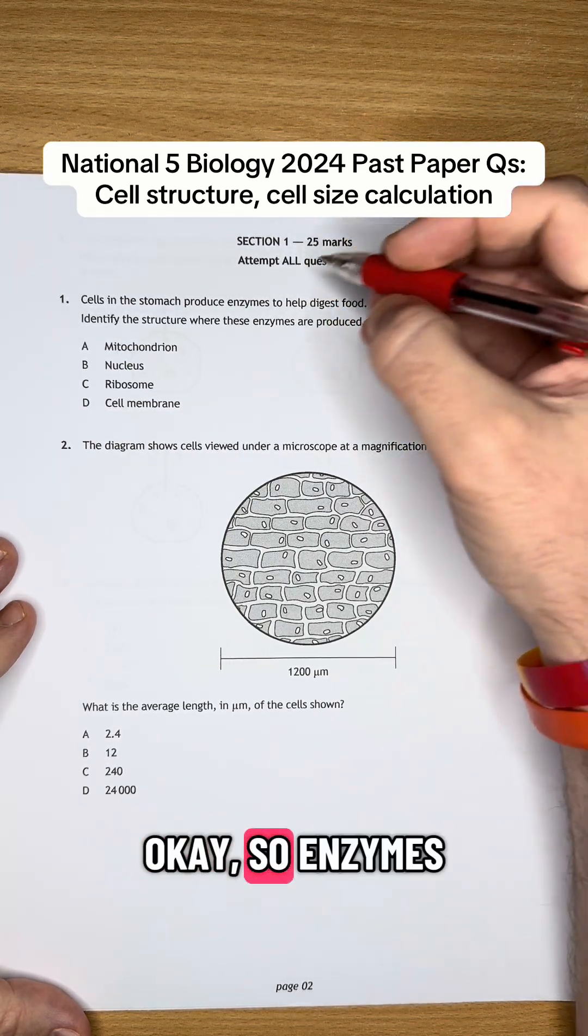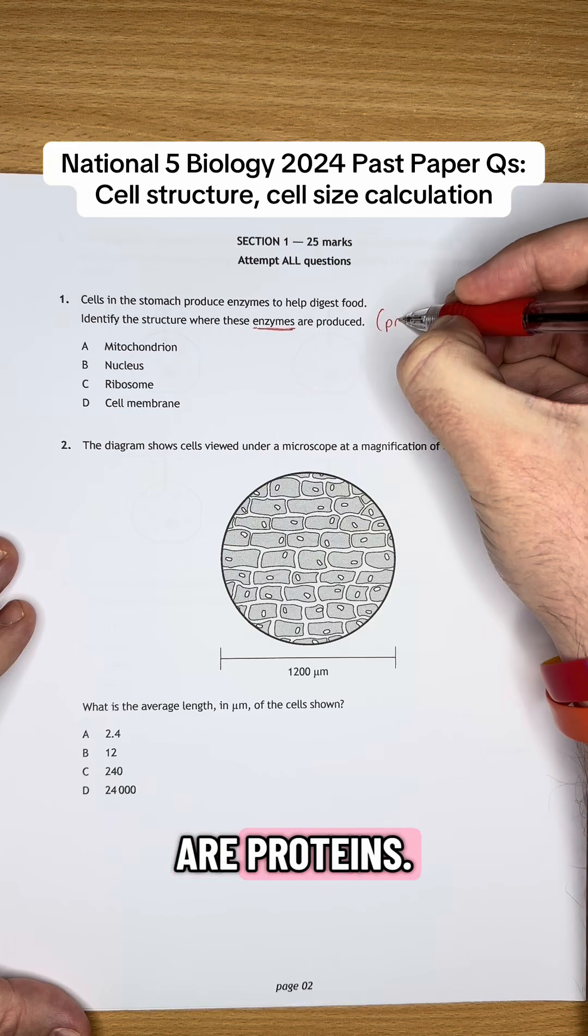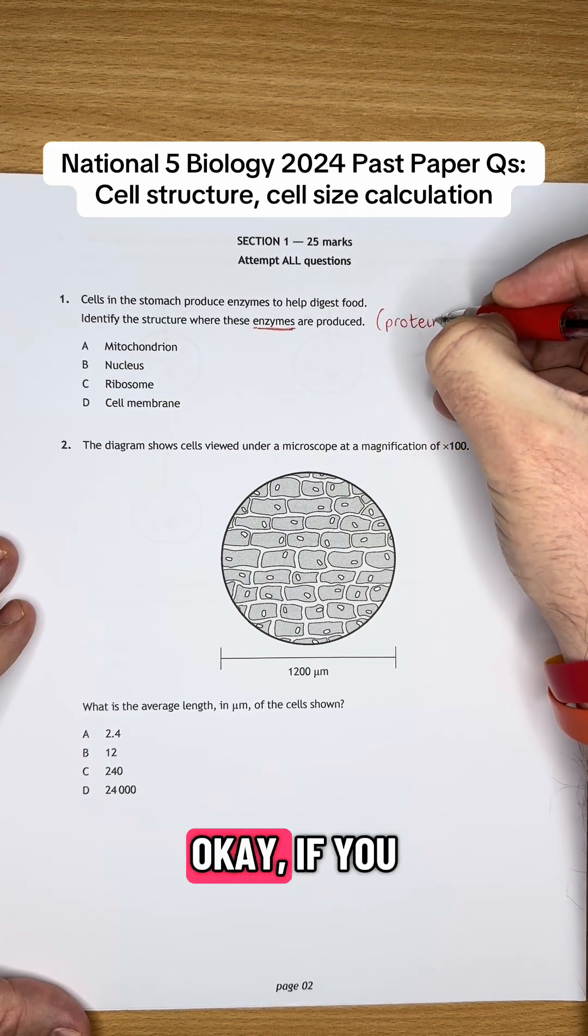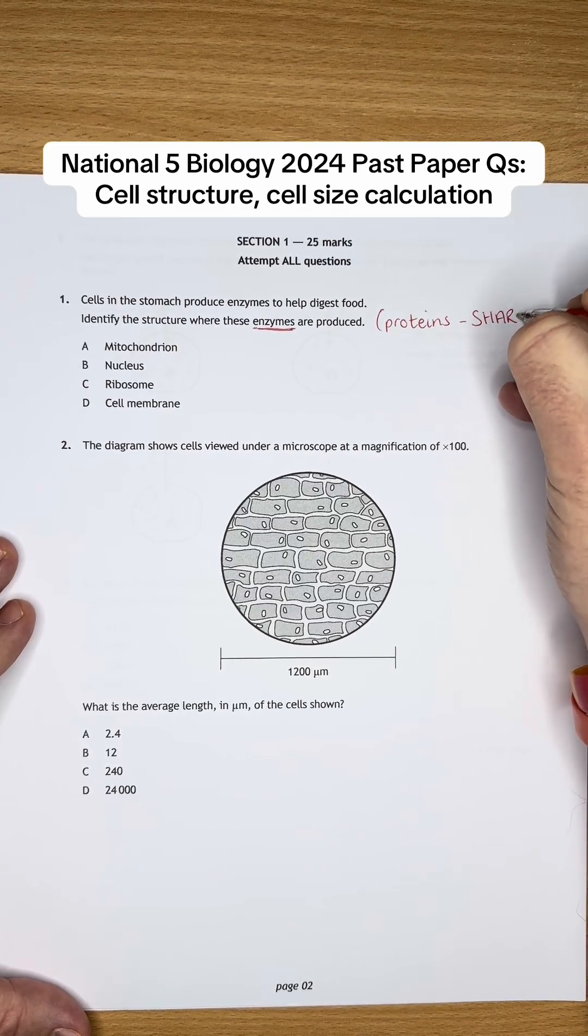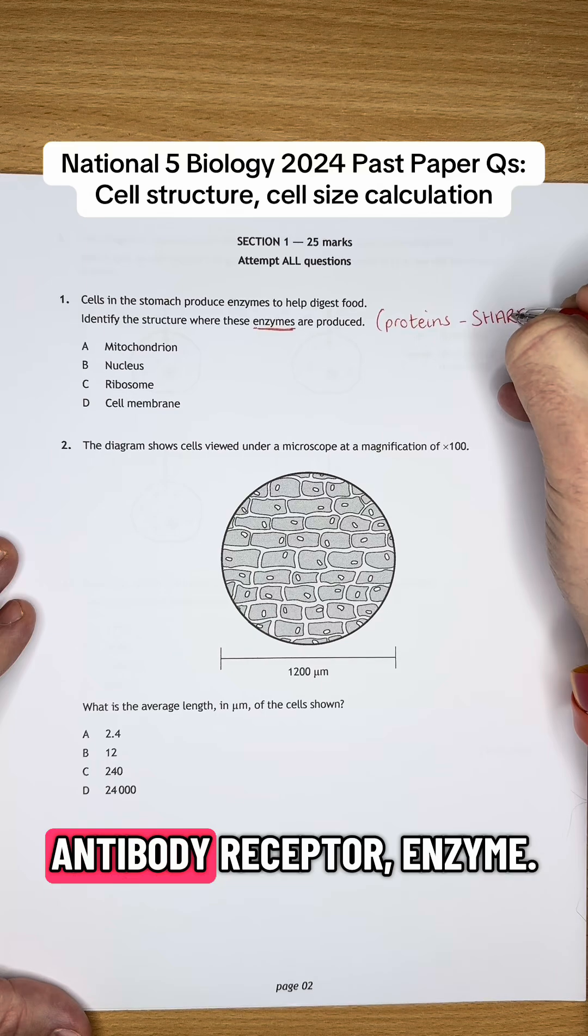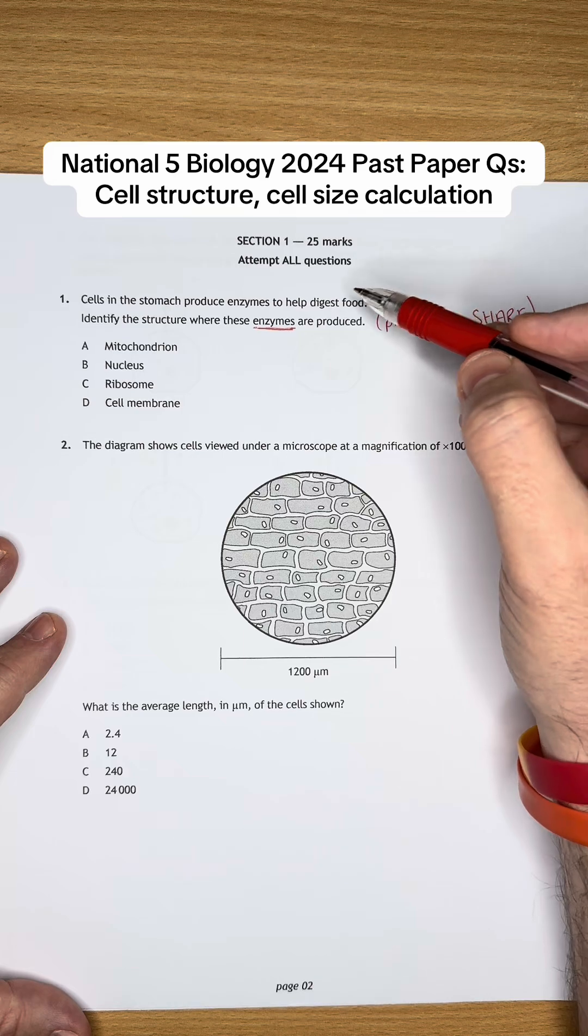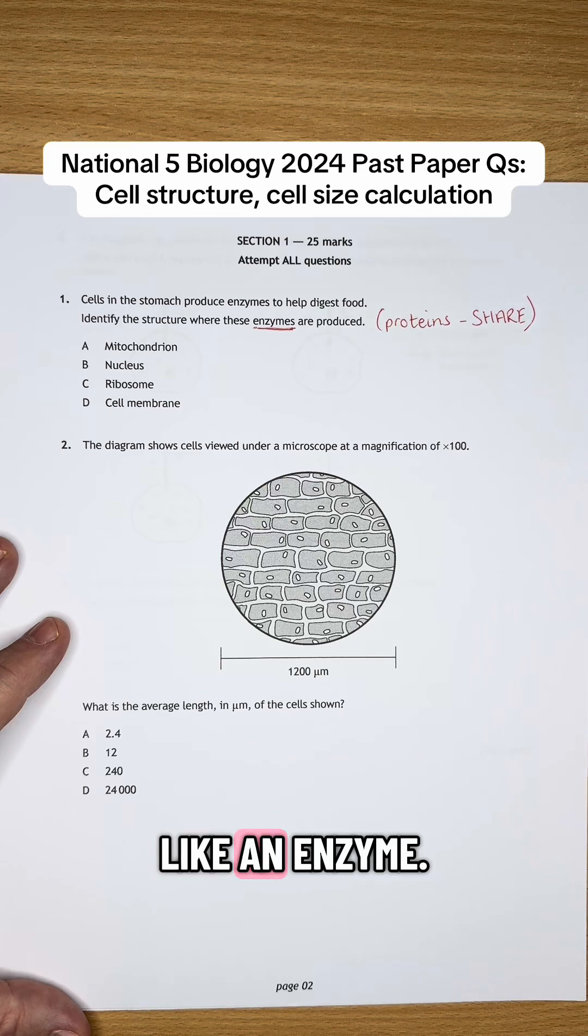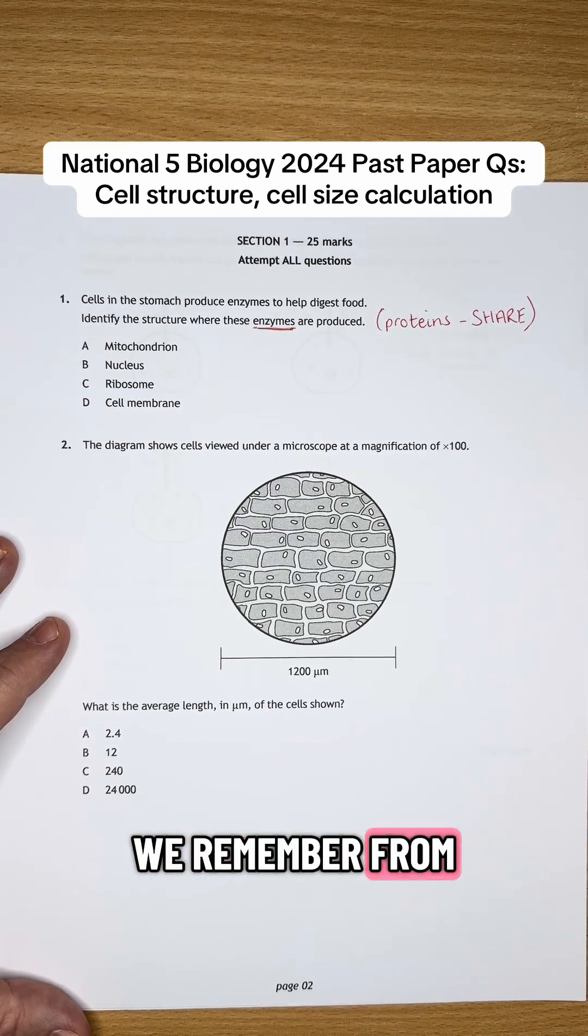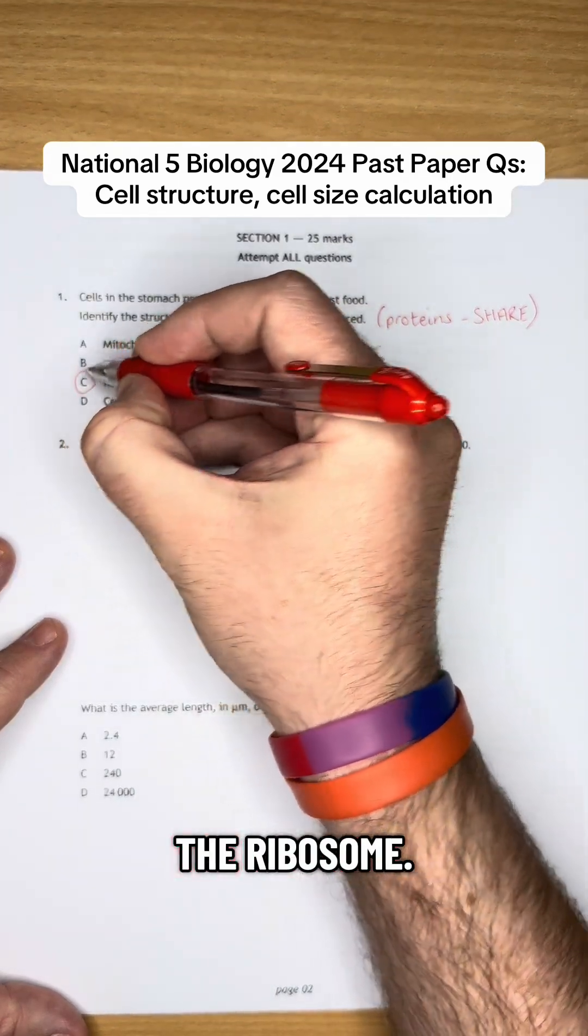So enzymes are proteins. If we remember that proteins are SHARE: structural, hormone, antibody, receptor, enzyme. So these are proteins. Which structure would produce a protein like an enzyme? Hopefully we remember from topic 1.1 that the site of protein synthesis is the ribosome.